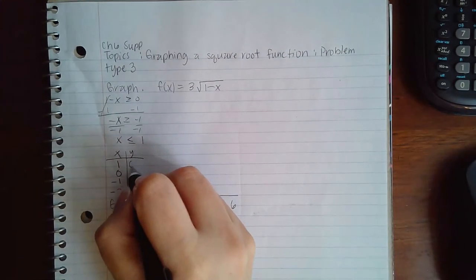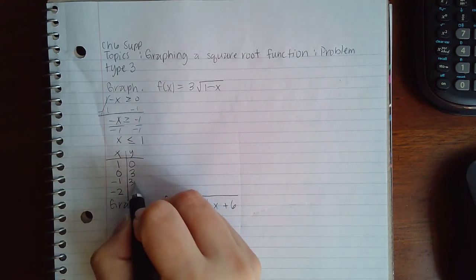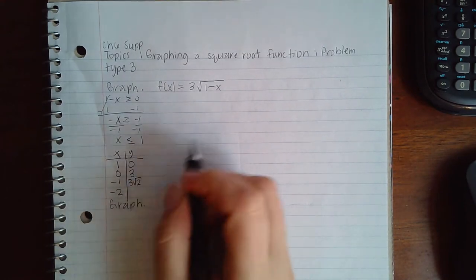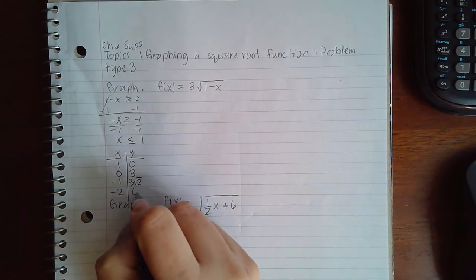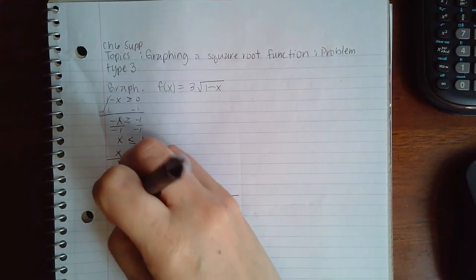And so when I plug those in there, for here I'm going to get 0, here I'm going to get 3, here I'm going to get 3 square root of 2, and here I'm going to get 3 square root of 3.